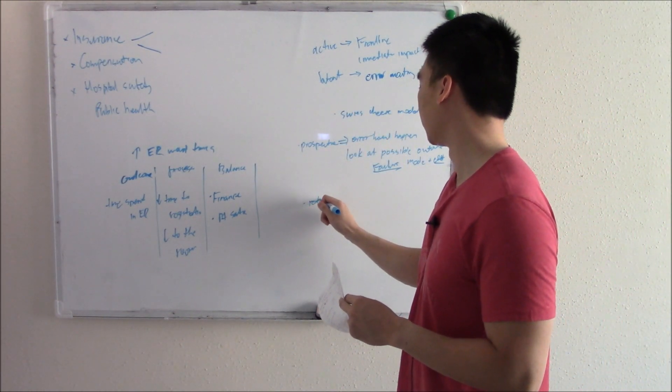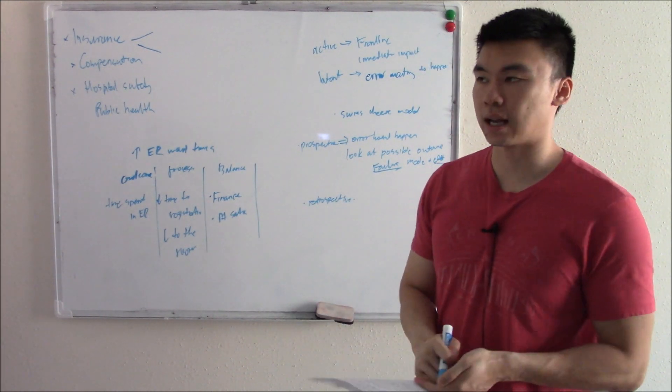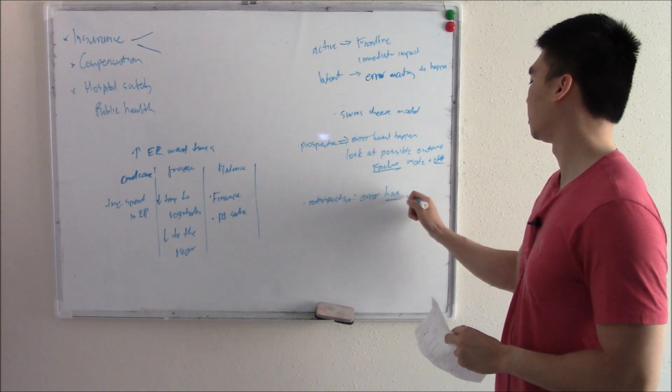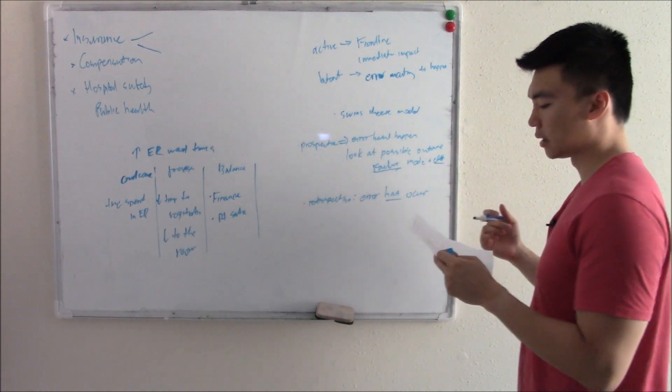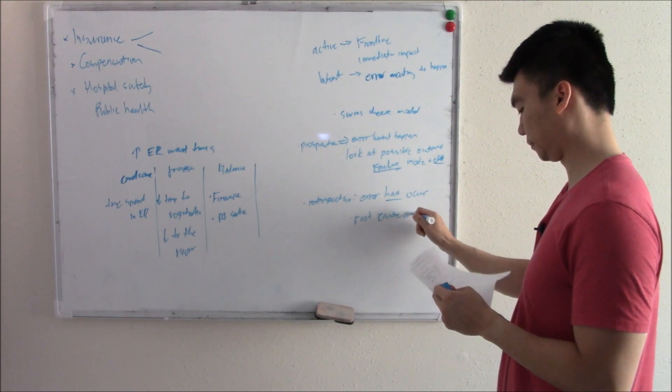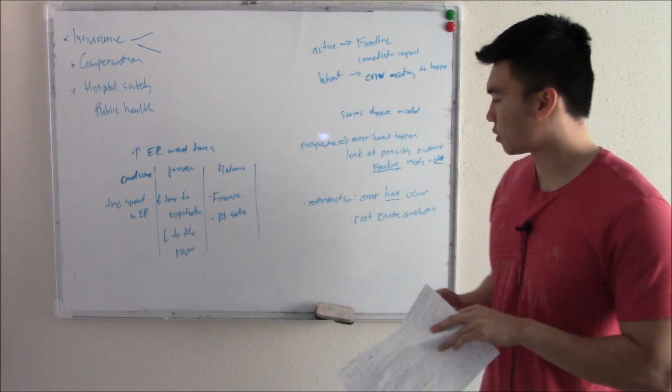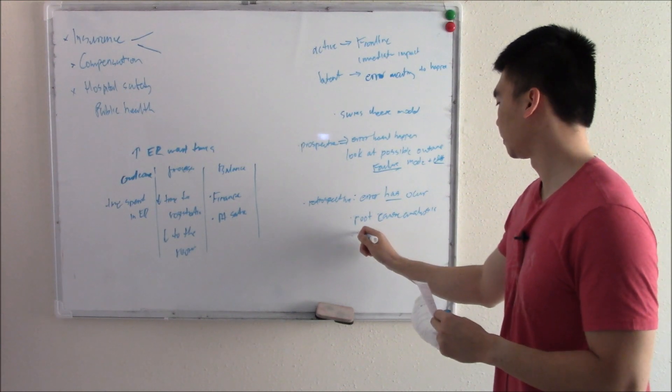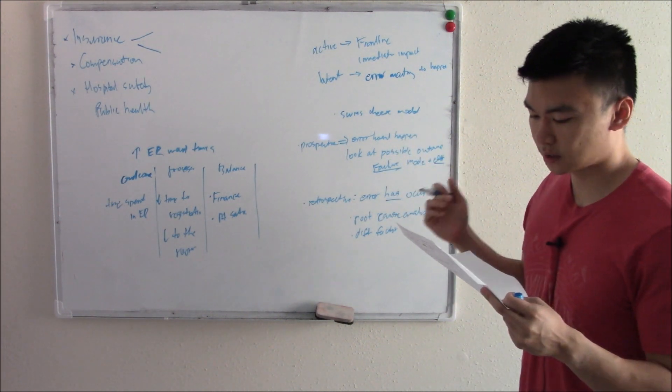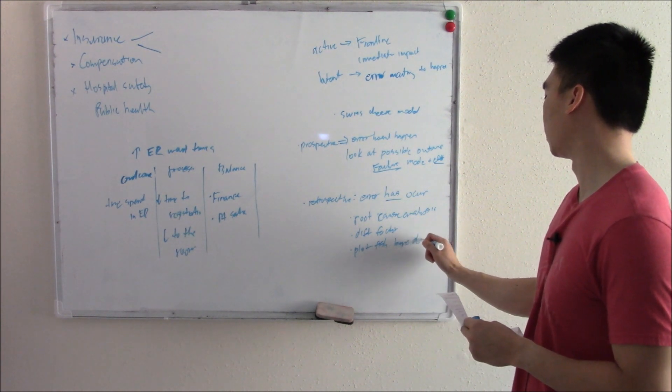Now, there's something called retrospective identification where some error happened. And how can we prevent that from happening in the future? So retrospective, an error has occurred. You're trying to identify the problem and prevent it from happening. We do this through root cause analysis. So what you do is you look at all the records, look at all the people that were involved, talk to them, look at all the different systems, look at all the different factors. Again, we have a lot of factors going in anytime there's a hospital.